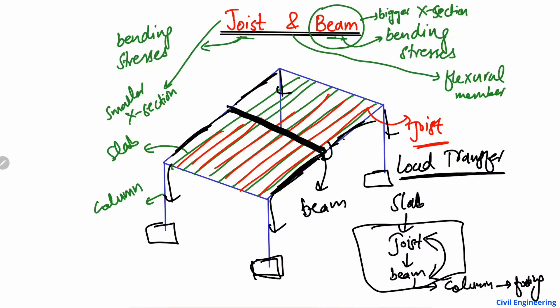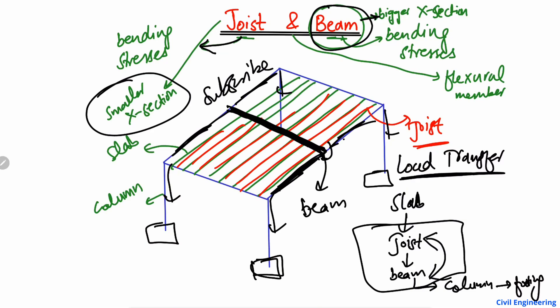In conclusion, a joist behaves like a beam but is in a smaller cross-section. A beam is a bending and flexural member like a joist, but it is always in a bigger cross-section. Hope you guys understand. Don't forget to subscribe to our channel for more civil engineering videos. Thank you for watching.